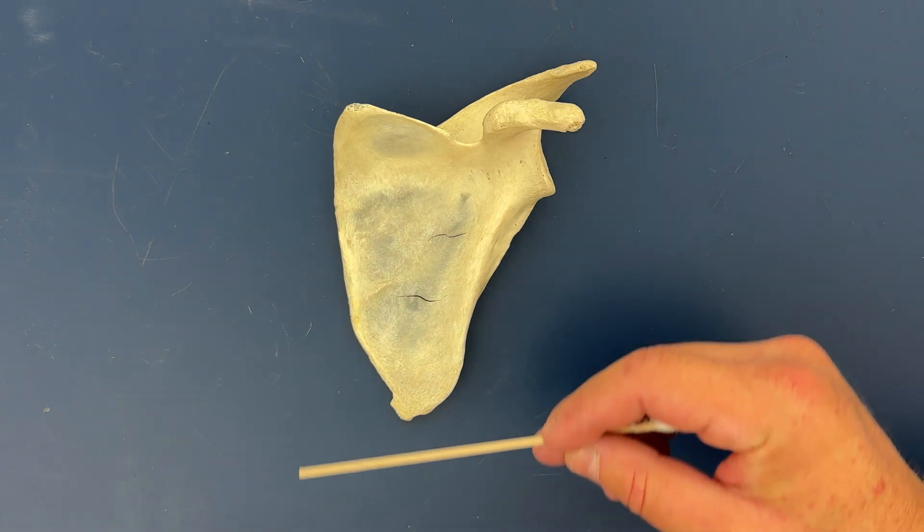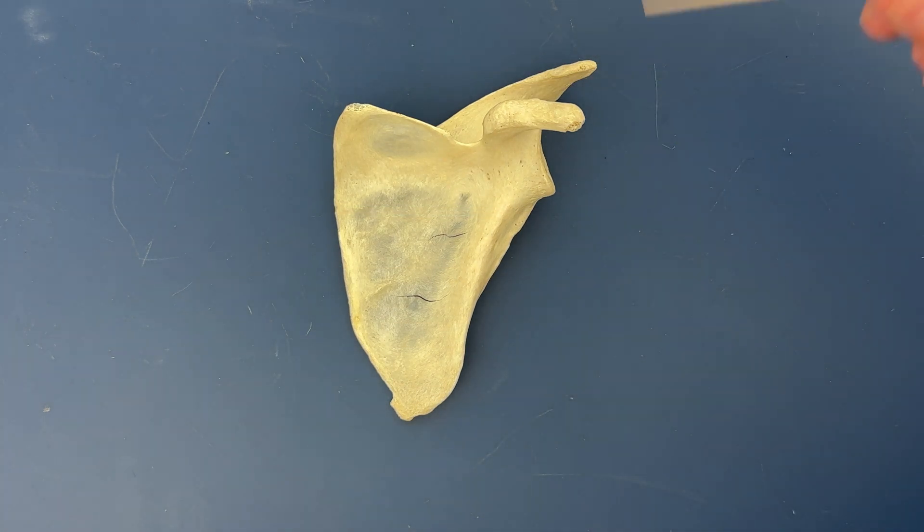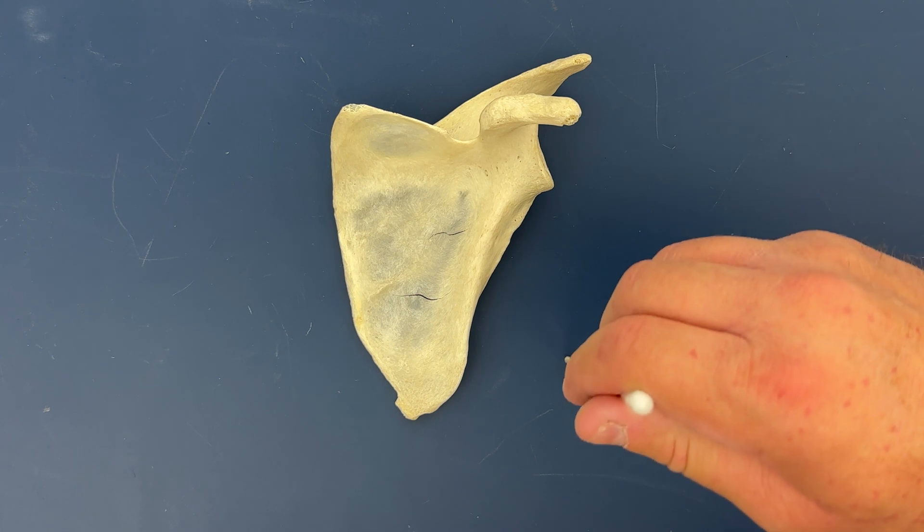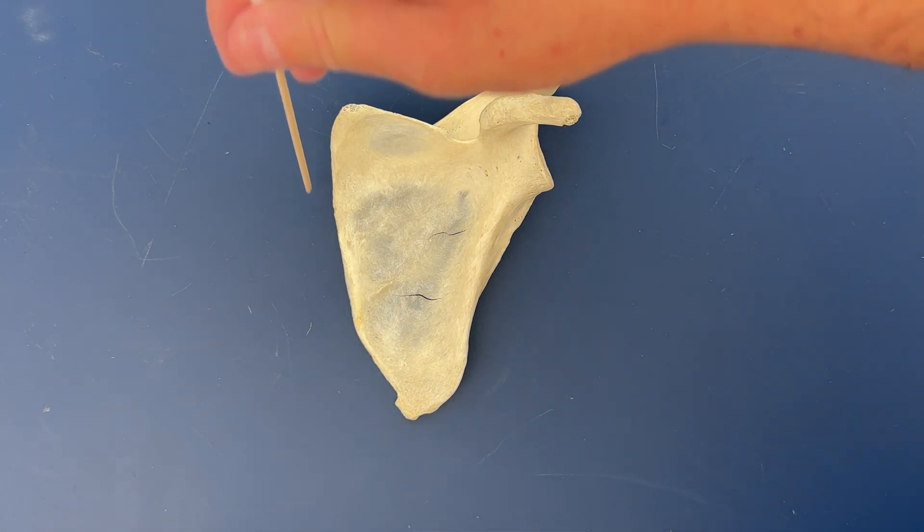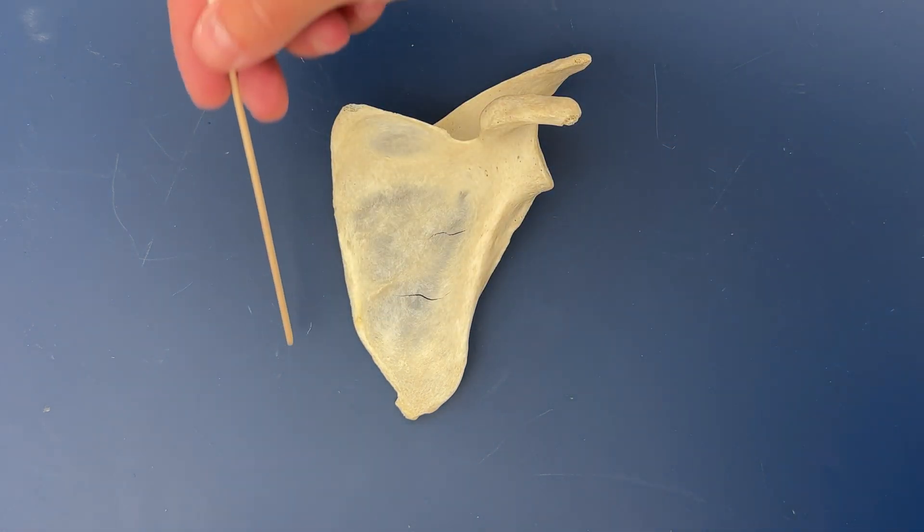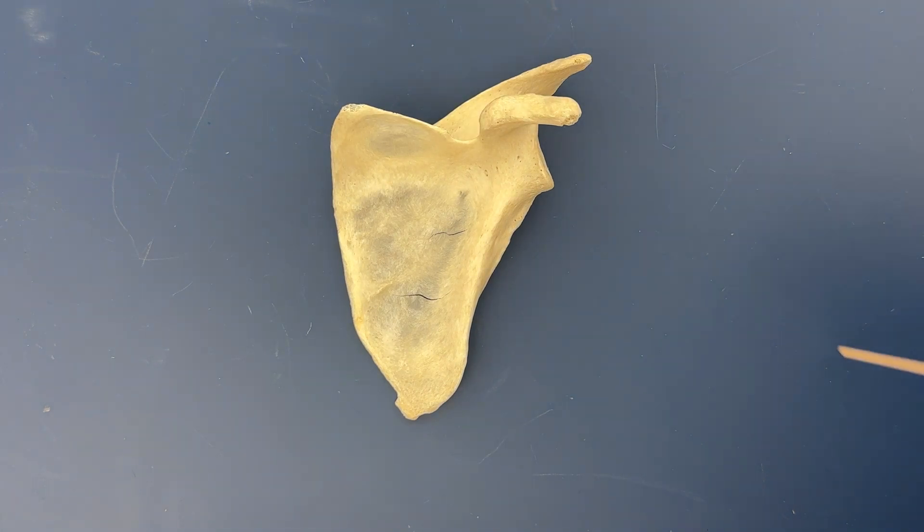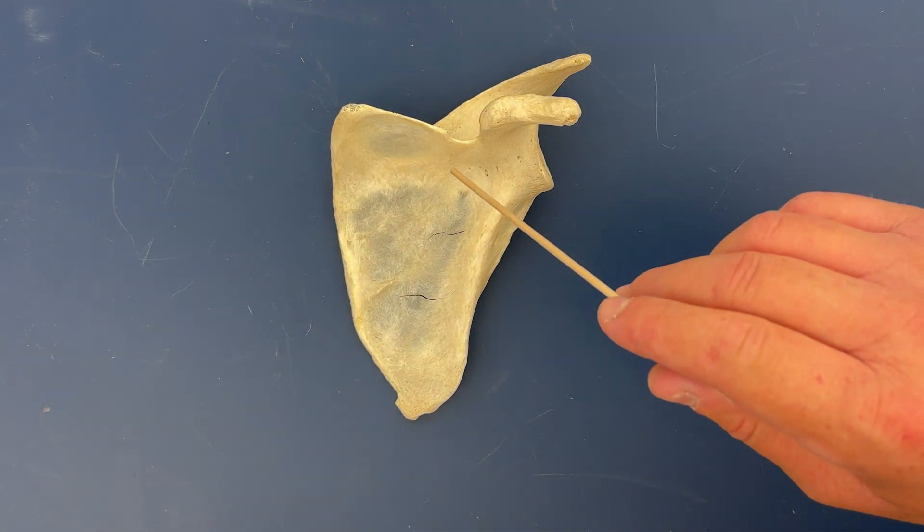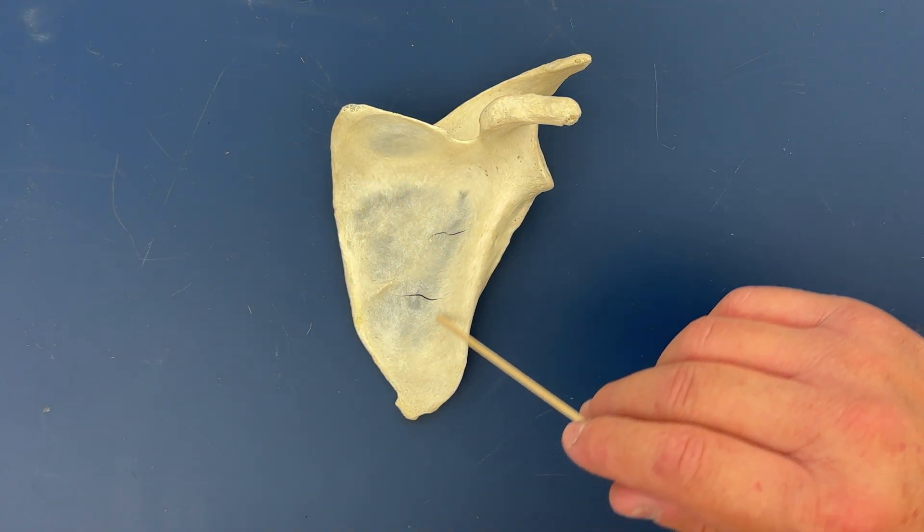This is the anterior view of the bone. This again is the lateral side of the bone and this is the medial side of the bone. And from this view we can nicely see the subscapular fossa.